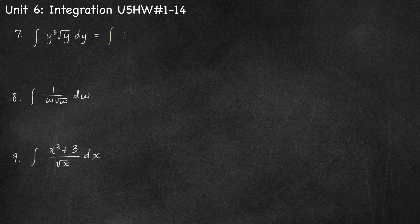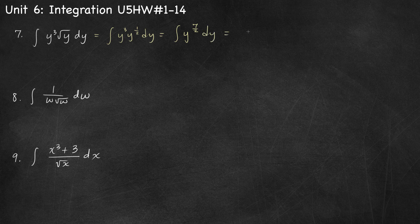Number 7. We rewrite this as y cubed times y to the 1/2. When multiplying expressions with the same base we add exponents: 3 plus 1/2 is 7/2. Then we use the power rule: add 1 to get y to the 9/2, and divide by 9/2, which is the same as multiplying by 2/9, plus c.